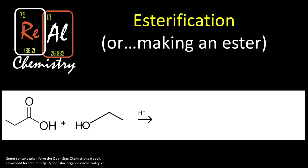Welcome to another episode of Real Chemistry. Today we're going to be talking about esterification — how to make an ester. We make an ester from two compounds: a carboxylic acid and an alcohol. We'll look at a formal definition, work a problem, and then do a few practice problems.